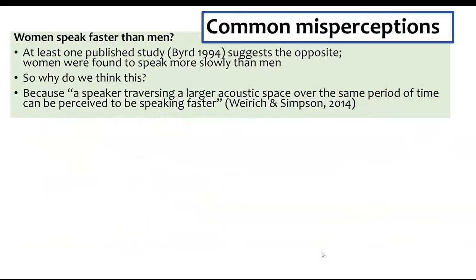It's worth discussing some common misperceptions about the acoustics of gender. For example, it's sometimes said that women speak faster than men, but the one research study referenced in a recent textbook actually found the exact opposite — women spoke more slowly than men. One idea for why this perception persists is that if women are working within a greater acoustic space, as seen in the vowel space diagram, speaking at the same rate would involve more articulatory motion and therefore be perceived as faster.